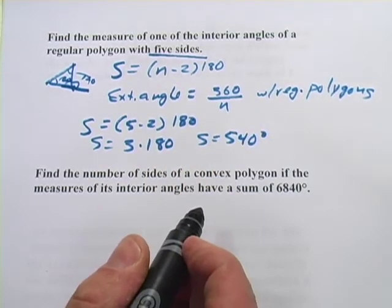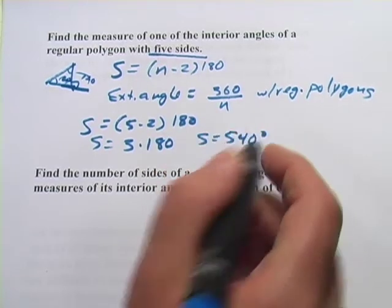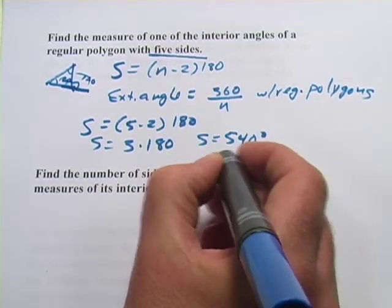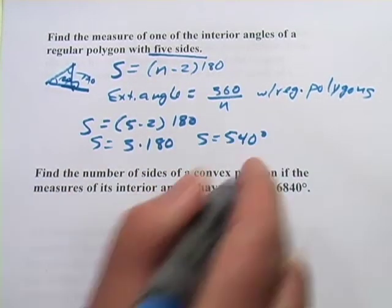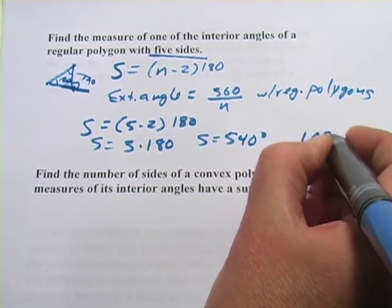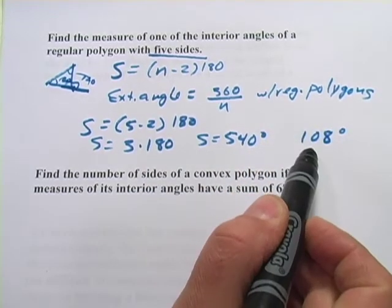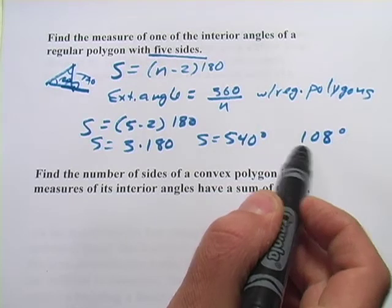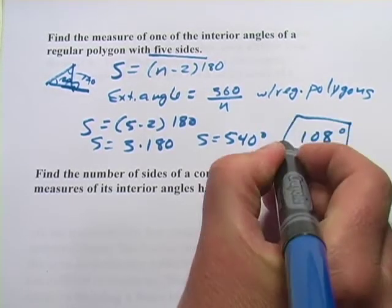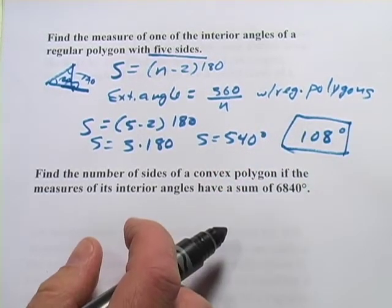But there are five sides, or sorry, five angles, so I divide that by five and I get 108 degrees. So, for a regular pentagon, I'm going to get an angle of 108 degrees for my interior angles.